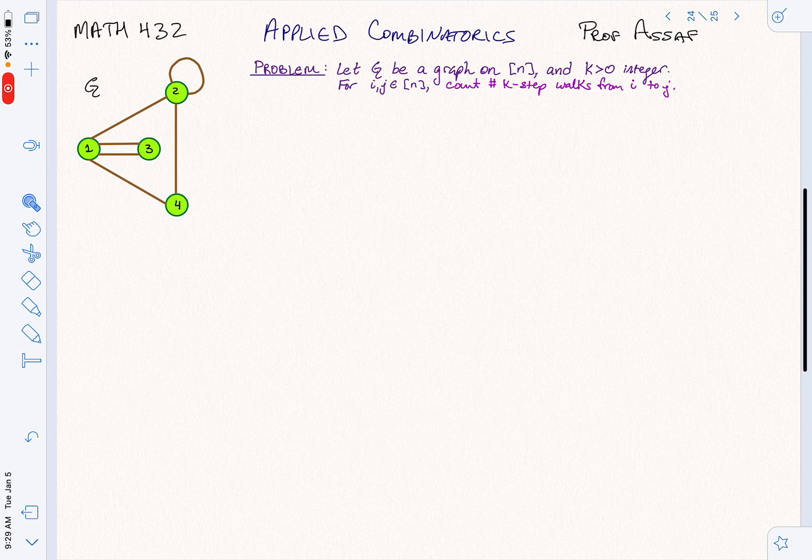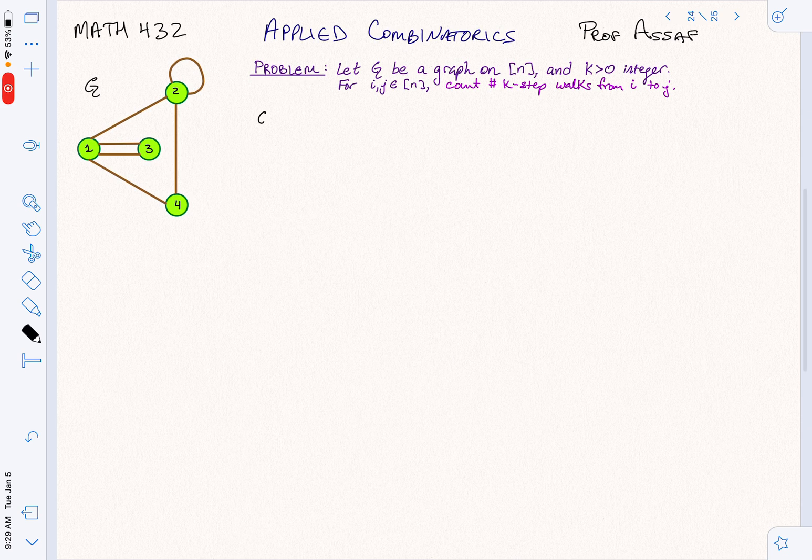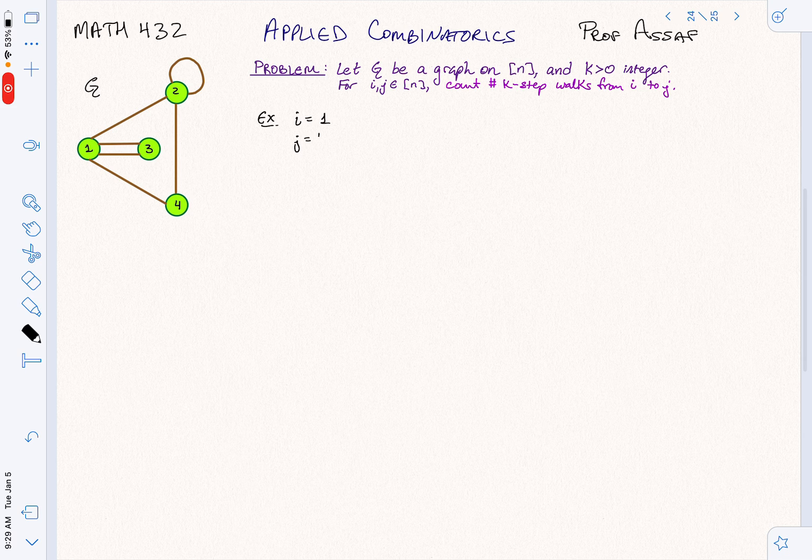Let K be a positive integer, and we're going to try to count the number of K step walks from I to J. Let's do an example. In the graph that we have here, we want to take I equal 1, J equal 4, and K equal 3.